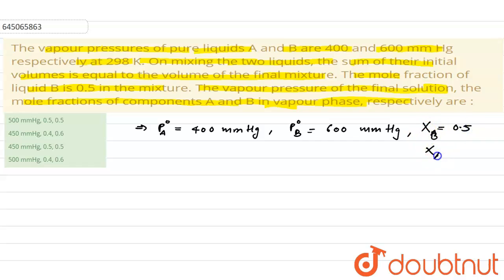We can find out mole fraction of A. It would be 1 minus 0.5, so it will also be 0.5. Now we can find out the total pressure and we know very well that P total is given as mole fraction of A into P⁰A plus mole fraction of B into P⁰B.